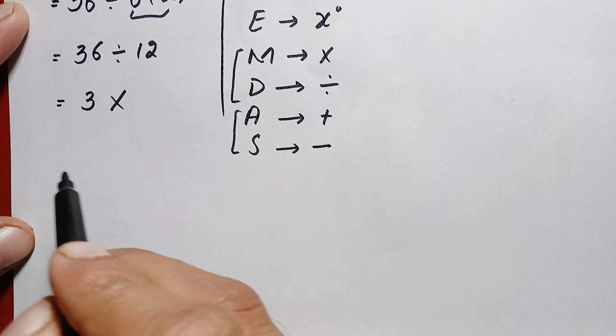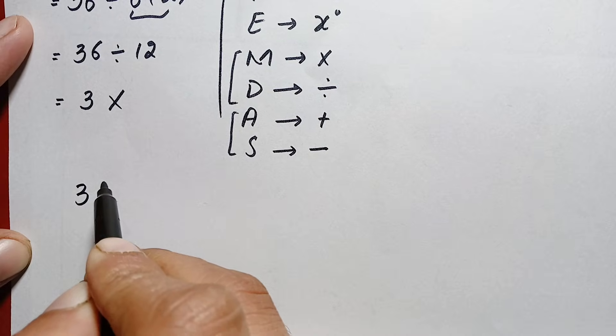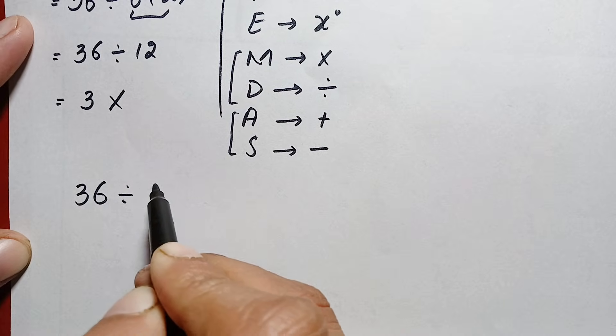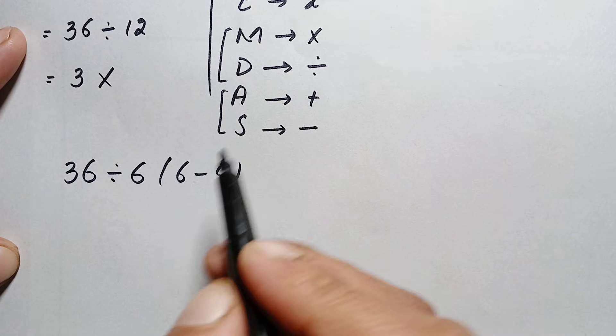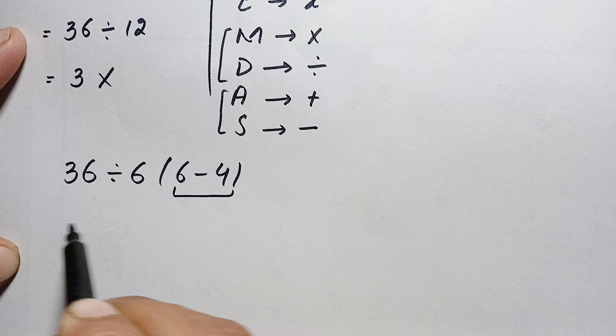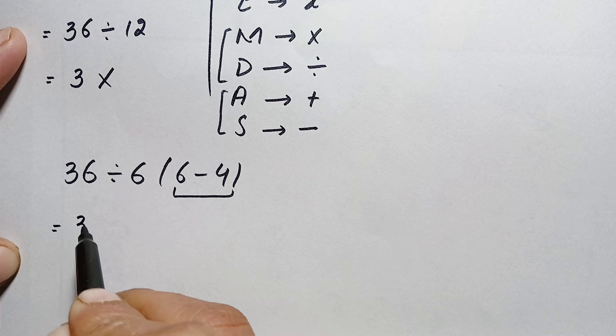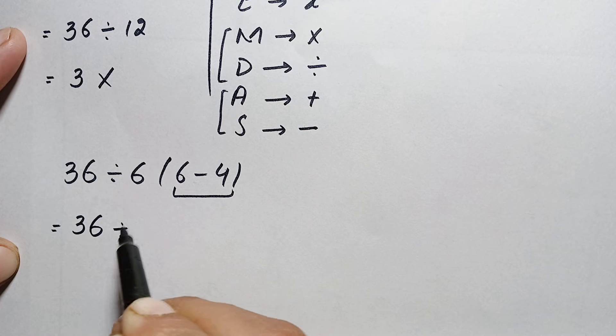So the problem will become... According to this rule, first we will solve the parenthesis, so this is simply 36 divided by 6, and 6 minus 4 is simply 2.